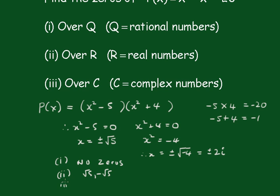And the complex ones are the complete solutions: root 5, minus root 5, and plus or minus 2i.